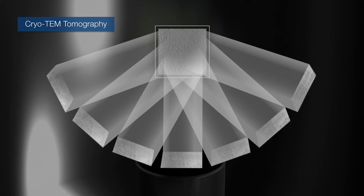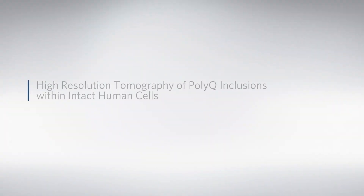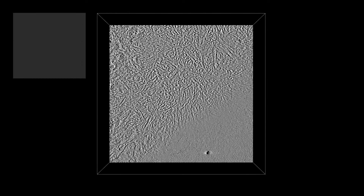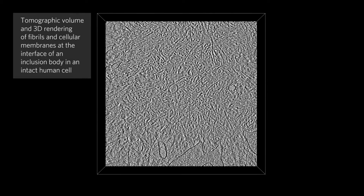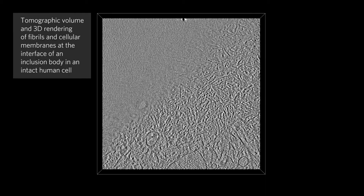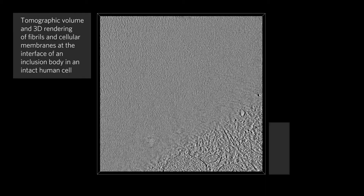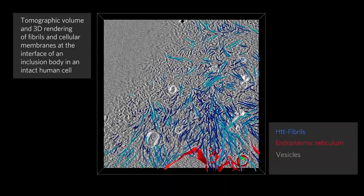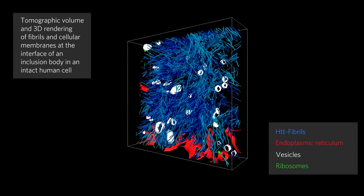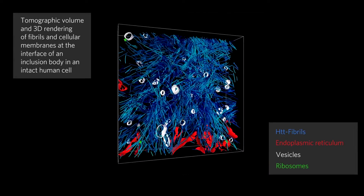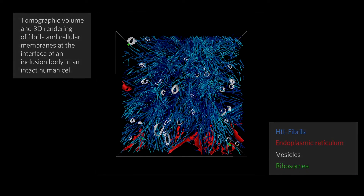These images are then computationally reconstructed to produce a high-resolution 3D tomogram. We will display two examples of such tomograms. In these examples, the raw EM data is shown first in grayscale, then specific structures are computationally selected and rendered in colors. Here we look at a polyQ inclusion within a human HeLa cell. The inclusion consists of fibrils, shown in blue, and these fibrils interact extensively with different cellular membranes, especially those of the endoplasmic reticulum, shown in red. Fibril-membrane interactions lead to membrane deformation and perhaps rupture.